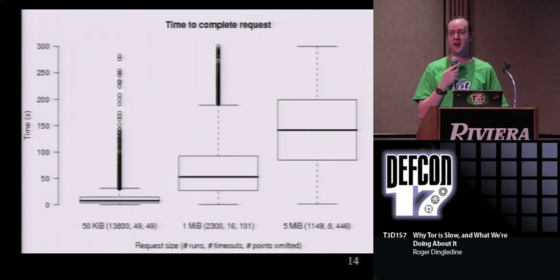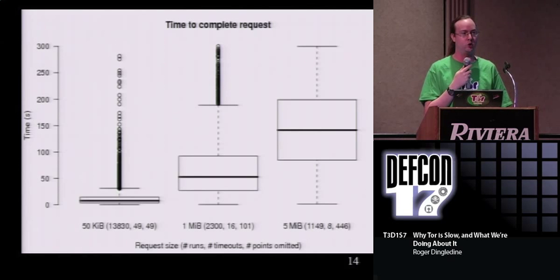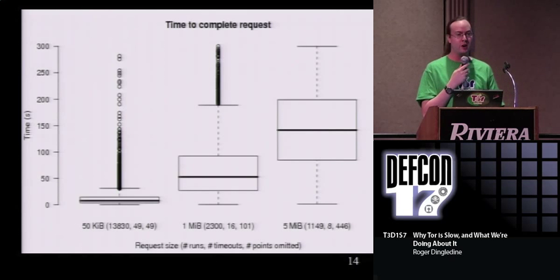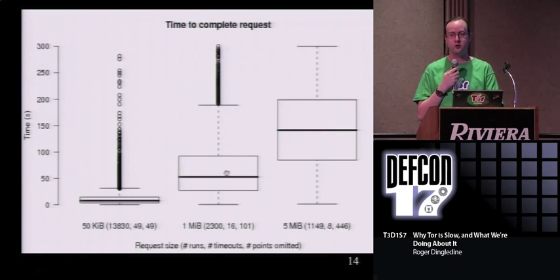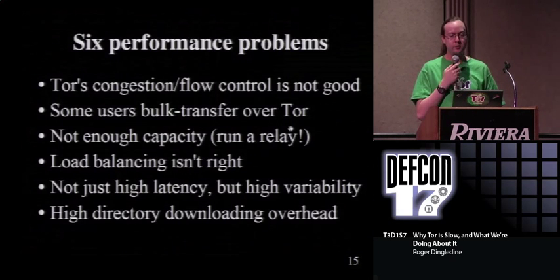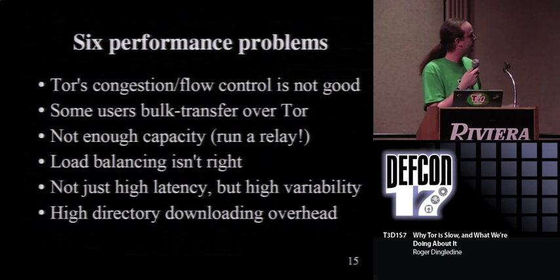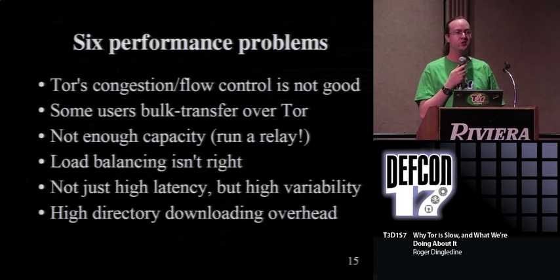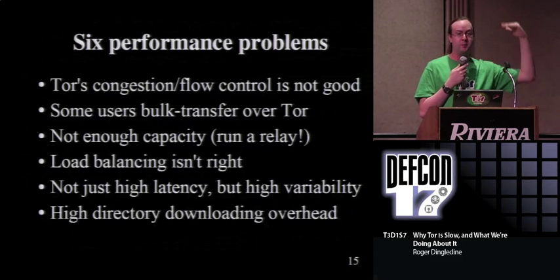We started out developing Tor saying let's try to provide the most bandwidth we can to users, because obviously that will mean you get good enough latency and good enough other network properties. And it turns out that's not true. Providing really good bandwidth means the folks who want lots of bandwidth end up getting good service, and the folks who want other properties like latency don't. So we've got two problems: people web browsing takes like eight seconds, and people doing bulk transfer over Tor - you can pull down a five megabyte file and the average is three or four minutes. I've got a list of six problems that we need to look at, ordered by priority.